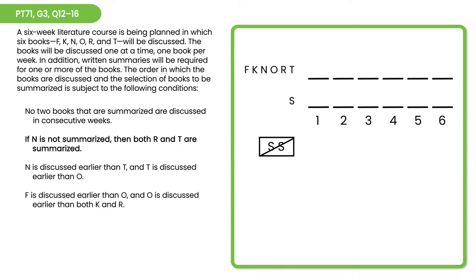The second rule tells us: if N is not summarized, then both R and T are summarized. This is a conditional rule. On the left side of the arrow, N is not summarized; on the right side, both R and T are summarized. We use a slash to represent N not summarized on the left, with subscript S on both R and T in the necessary condition. The contrapositive: if R or T is not summarized, then N is summarized.